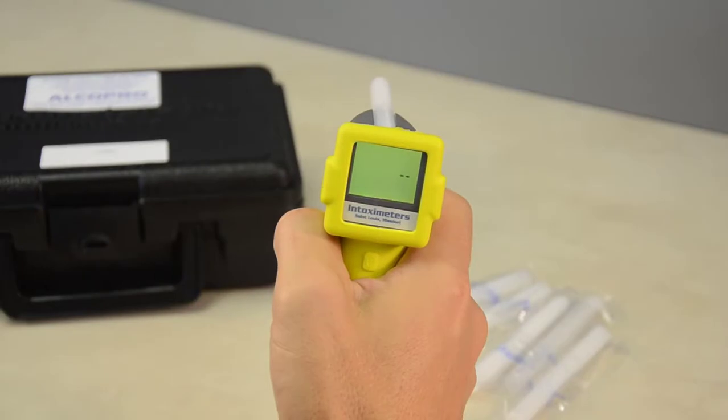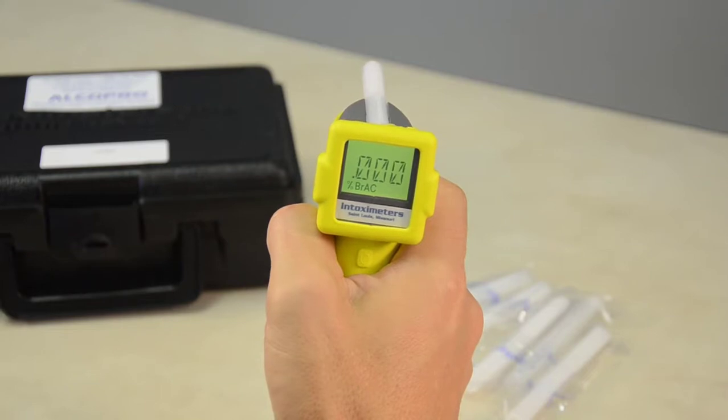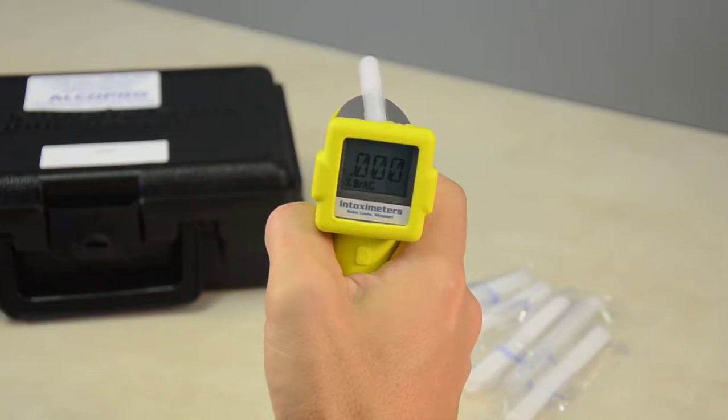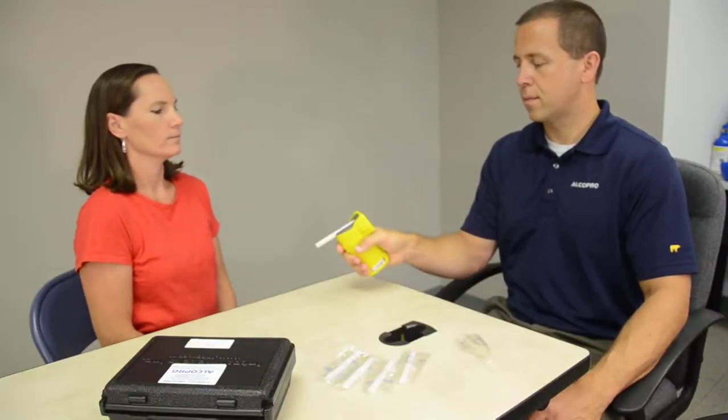Once a breath sample is captured, a dash scrolls across the display, which means the device is analyzing the breath sample. Next the AlkaSensor FST will display the results. The test results display for 15 seconds before the instrument automatically powers off. You may also press the OFF button to turn off the instrument.